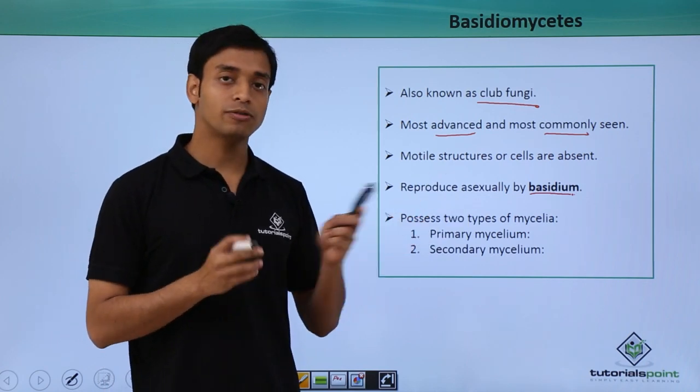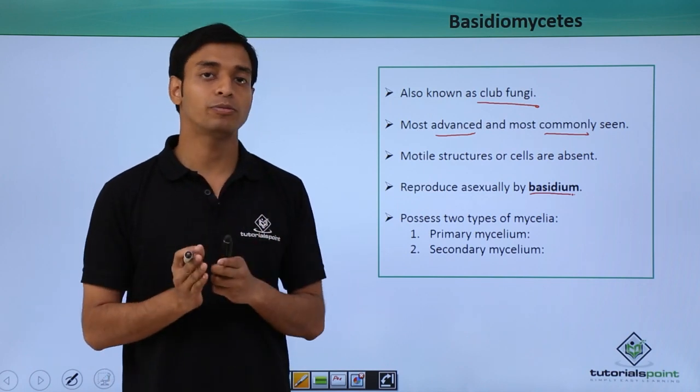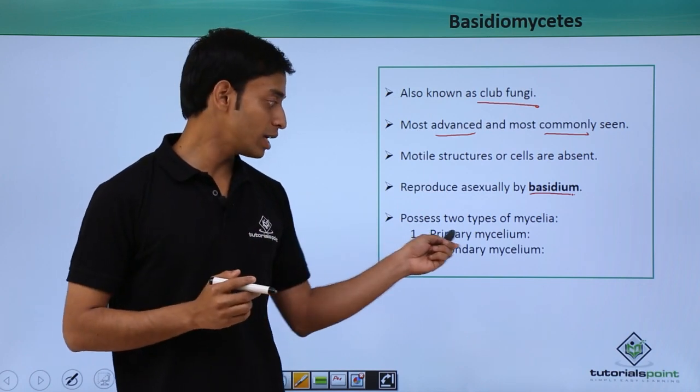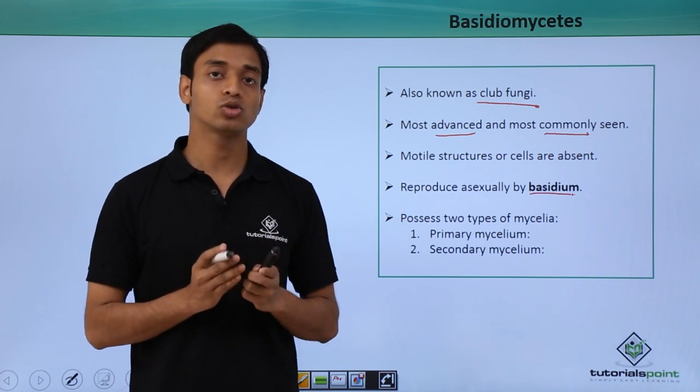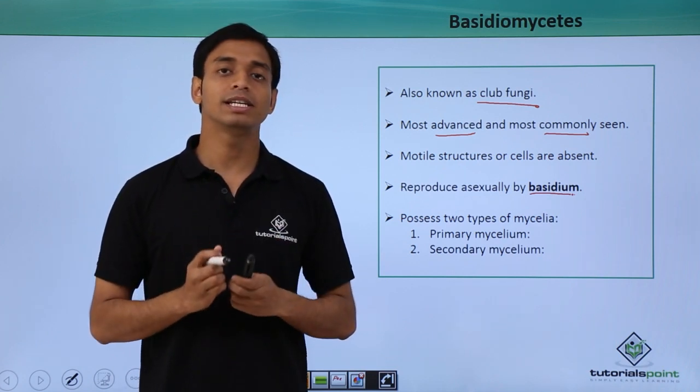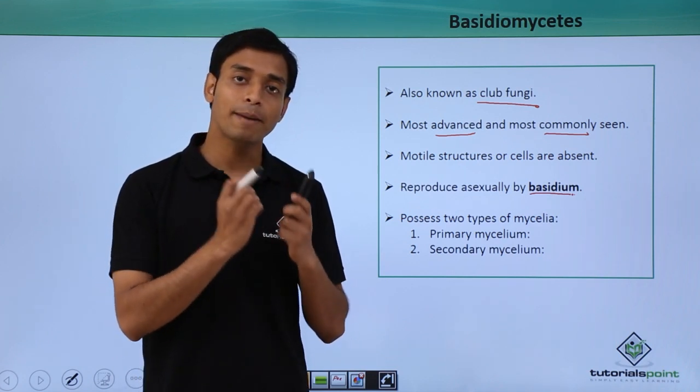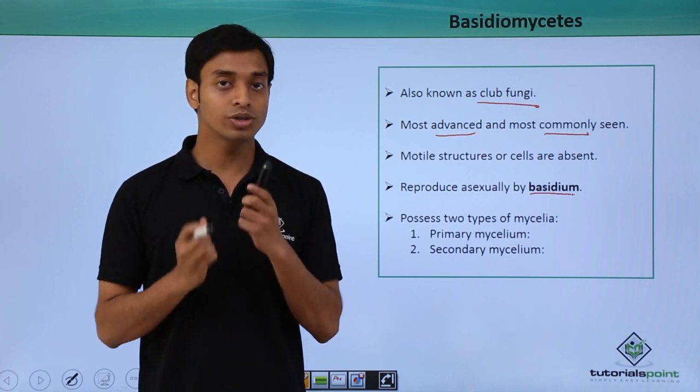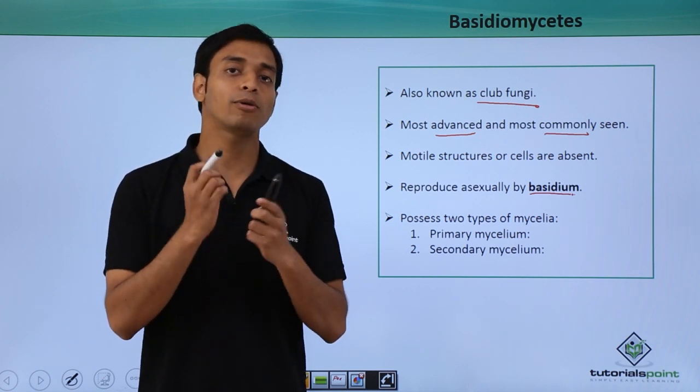These possess two types of mycelia. The first type is known as primary mycelium. Primary mycelium is formed when haploid spores germinate, so this type of mycelium will have haploid nuclei.